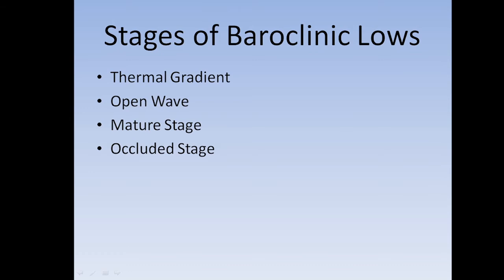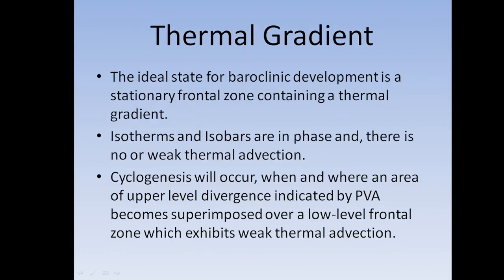The stages of a baroclinic low are: thermal gradient, open wave, mature stage, and occluded stage. The ideal state of baroclinic development is a stationary frontal zone containing a thermal gradient where isotherms and isobars are in phase with no or weak thermal advection. Patterson's rule states that cyclogenesis will occur when and where upper level divergence indicated by PVA — positive vorticity advection — becomes superimposed over a low-level frontal zone exhibiting weak thermal advection.